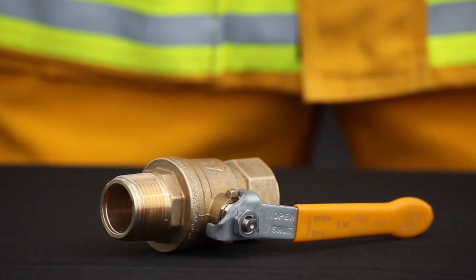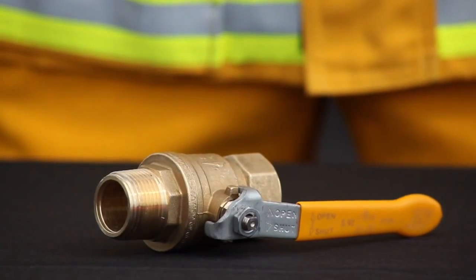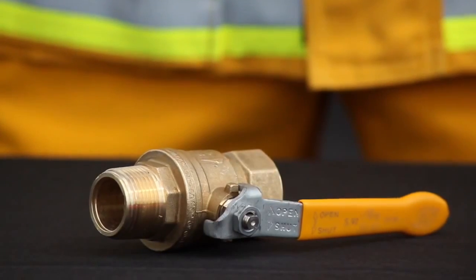The ball valve assembly controls the flow of fire ice into the water stream. When the ball valve is closed, plain water will flow through the eductor body.